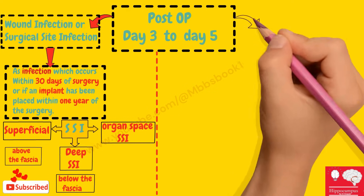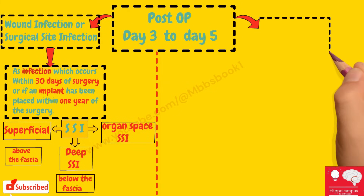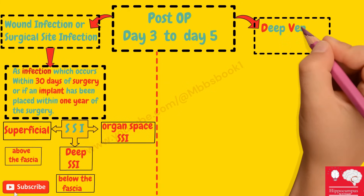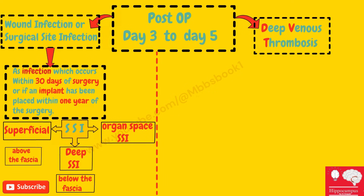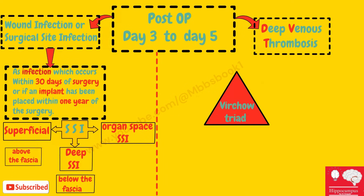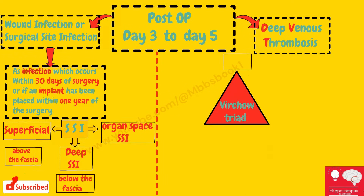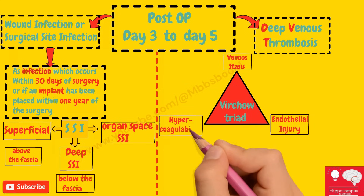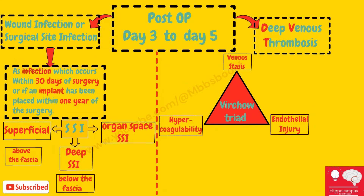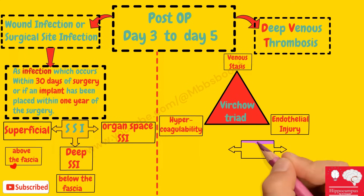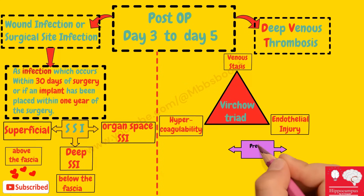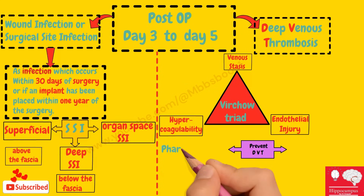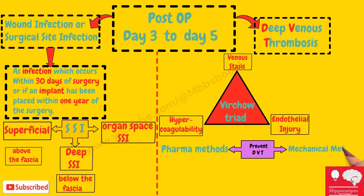Another cause of fever between day three and day five is DVT, that is deep venous thrombosis. Virchow's triad — venous stasis, endothelial injury, and hypercoagulability — describes the factors contributing to venous clot formation and deep venous thrombosis. To prevent DVT you have pharmacological methods and mechanical methods.